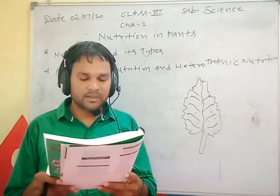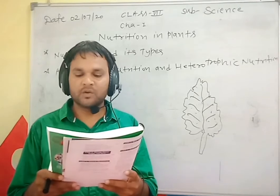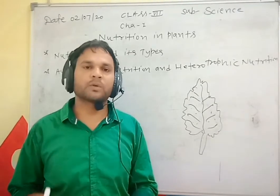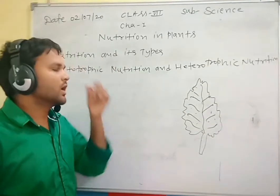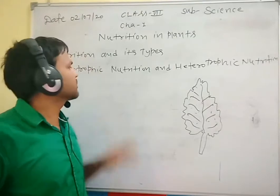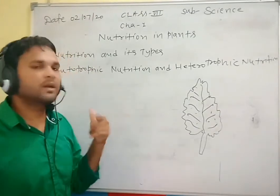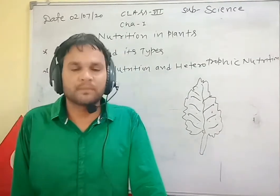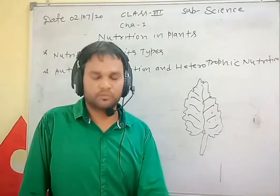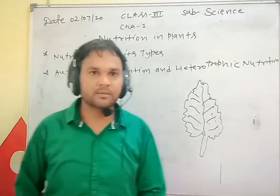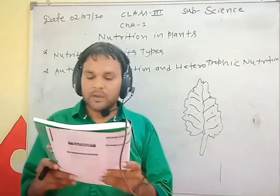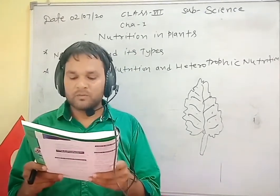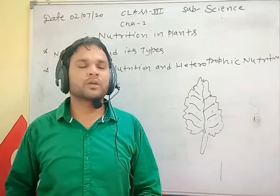Living organisms need a diet, and the kind of nutrition can be autotrophic or heterotrophic. So our types of nutrition are autotrophic and heterotrophic. What is autotrophic? Green plants prepare their own food from simple raw materials — this is autotrophic.